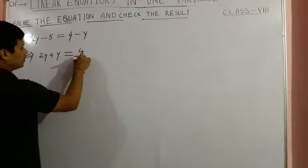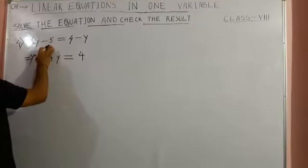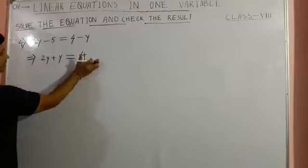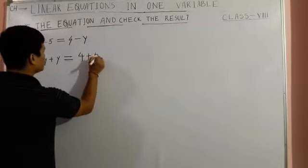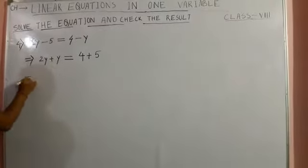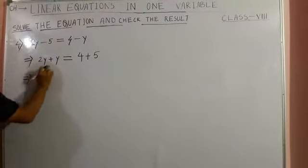Constant 4 is already on the right hand side. So 4 and 5 - this 5, it was on the left side of the equation. Now we are transposing that to the right side. It was negative, now it will be positive. Okay, 2y plus y...